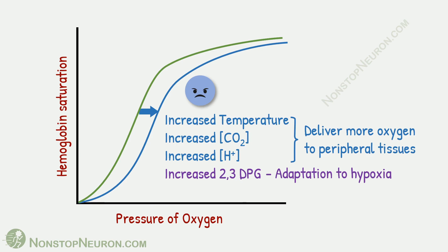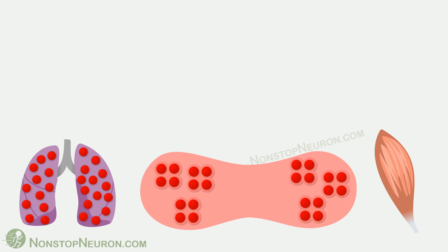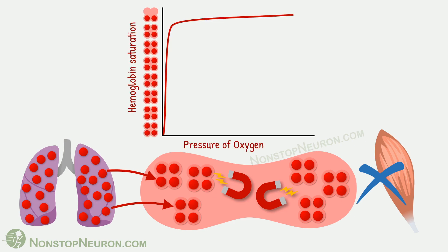These were the factors that shift the curve to the right. Now let's see a factor that shifts the curve to the left: carbon monoxide. Carbon monoxide increases the affinity of hemoglobin for oxygen. In the presence of carbon monoxide, hemoglobin loads oxygen at the lungs, but due to very high affinity, it does not release oxygen at peripheral tissues. So tissues are deprived of oxygen, resulting in serious damage or even death. The curve in this case shows that at the lungs hemoglobin gets saturated, but at peripheral sites there is hardly any change in saturation level — it stays high due to high affinity, indicating almost no release of oxygen.